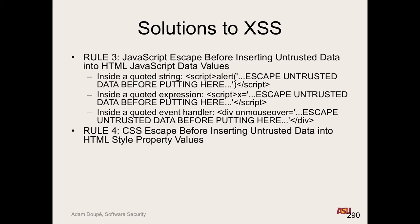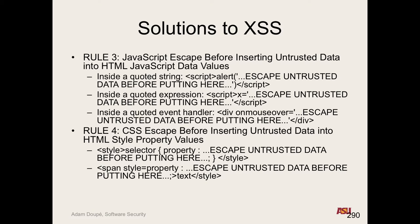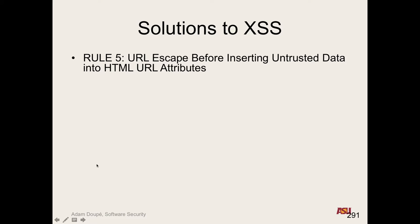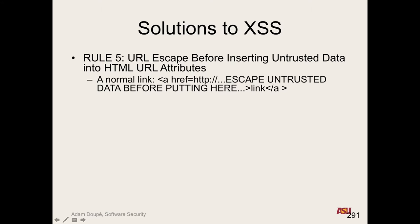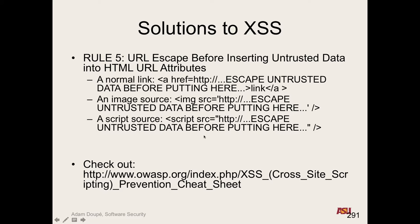CSS is used for styling, and it turns out you can execute JavaScript inside CSS — there are CSS rules that allow it. So if you're using user input in style sheets, inline styles, or style attributes on elements, those must be handled properly. There are also URLs — data inside href tags, image source, script source. The OWASP cheat sheet has a good list of how to actually prevent these things.